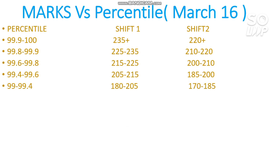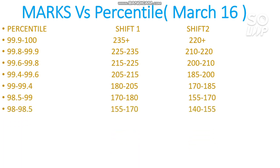For 99 to 99.4 percentile you need to score 180 to 205 for Shift 1 and 170 to 185 for Shift 2. For 98.5 to 99 percentile you need to score 170 to 180 for Shift 1 and 155 to 170 for Shift 2.